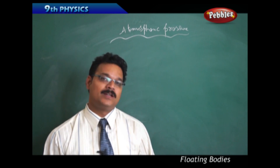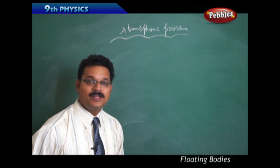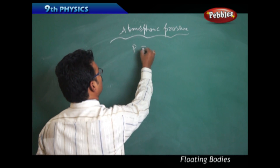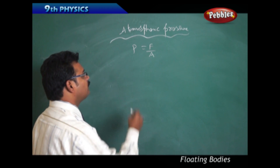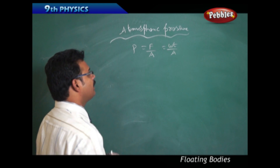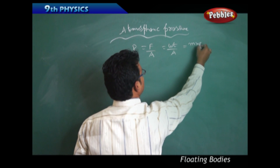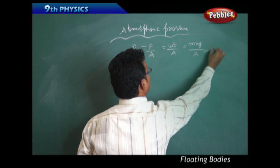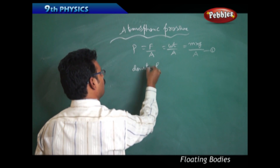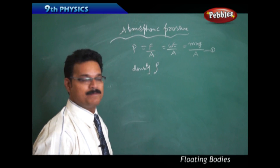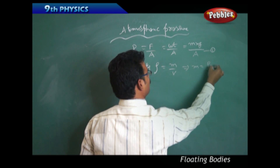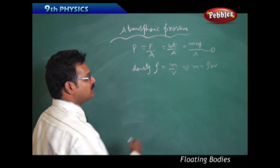Now, how do we find the atmospheric pressure? Let us do some mathematical calculation. We know that pressure P equals force by area, and force is also called weight by area — the weight of the atmosphere. The weight formula is mass into acceleration due to gravity. We also know that density rho equals mass divided by volume, which implies mass equals rho into V.